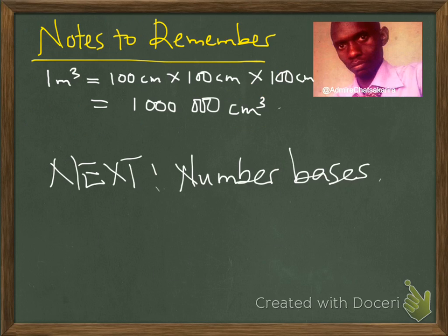Now to remember, 1 cubic meter, how did we come with 1,000,000 cubic centimeters? As we know that 1 cubic meter will be multiplying 1 meter times 1 meter times 1 meter. And 1 meter is equal to 100 centimeters. Therefore, it's the same as 100 centimeters times 100 centimeters times 100 centimeters, which will give us 1,000,000 cubic centimeters.